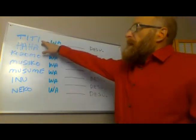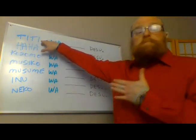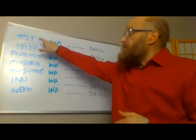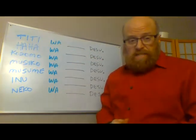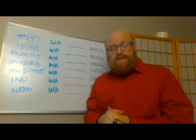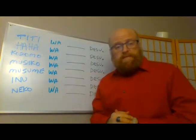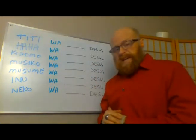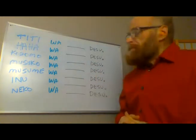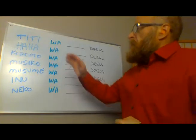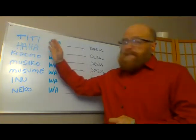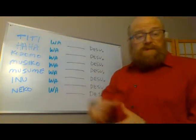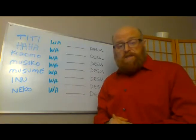The word for father — in terms of my father, not someone else's father — is chichi. It's T-I-T-I in traditional Japanese phonetics, but sometimes in books it's written C-H-I-C-H-I, chichi. We're going to simply add to it the particle wa, which we've had in previous lessons.